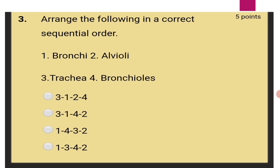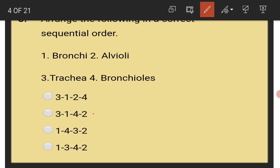Arrange the following in a correct sequential order. Trachea leads into bronchi, bronchi leads into bronchioles, bronchioles lead into alveoli. So the answer is 3-1-4-2.